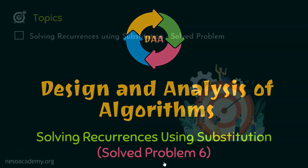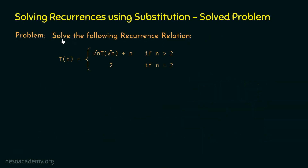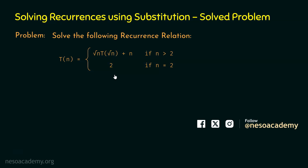Let's solve problem number 6 on recurrences using substitution. Here is the problem: solve the following recurrence relation T(n) = √n · T(√n) + n, if n is greater than 2. If n is equal to 2, then T(n) is equal to 2. This is the recurrence relation we need to solve. We have the recurrence relation given and we need to solve it using the substitution method.